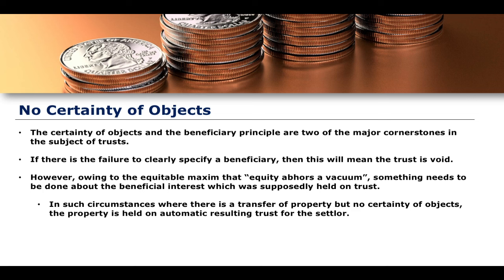In such circumstances, where there is a transfer of property but no certainty of objects and no beneficiary principle, the property is held on automatic resulting trust for the settlor. The settlor then becomes the beneficiary of this automatic resulting trust, given that there has been a transfer of property to the trustee but no beneficiary in the original trust. The automatic resulting trust therefore creates a beneficiary — that beneficiary being the settlor.